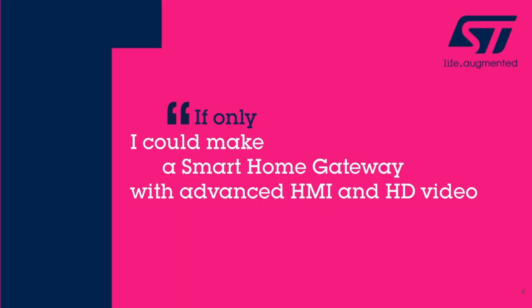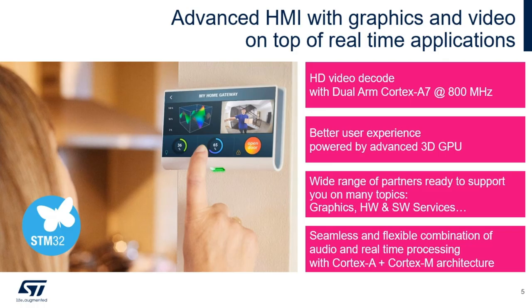Let's look at some possible applications. Perhaps you are designing an advanced gateway product, maybe a gateway used for home security, HVAC control, or home automation. The STM32 MP1 can address the critical features needed for these applications. With the dual Cortex-A7s clocked at 800 MHz, the STM32 MP1 can support 720p HD video decode. When using the STM32 MP1-157 with the optional 3D graphics core enabled, you can implement a high-performance user interface.